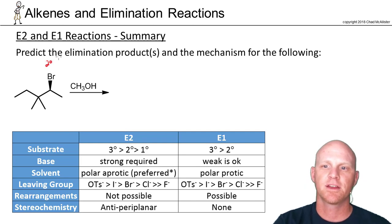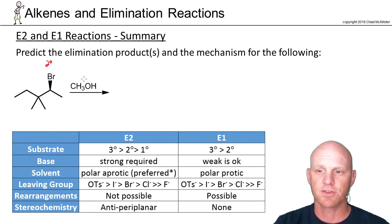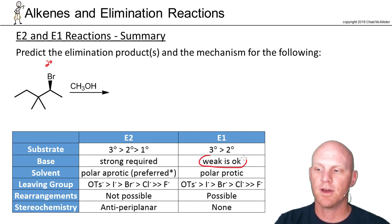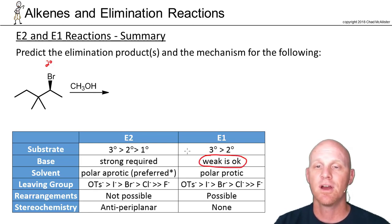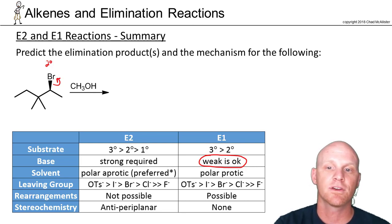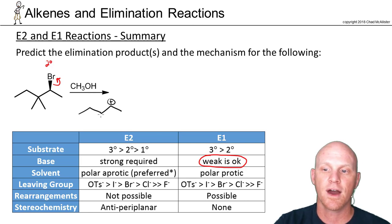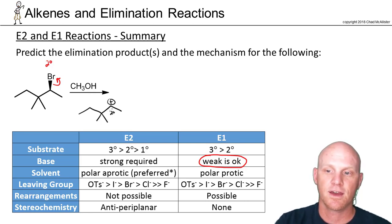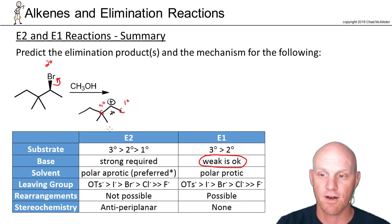Here we have a secondary halide — again, that doesn't tell us much. But the base is an alcohol, which is a weak base. That points us toward an E1 reaction. For E1, I highly recommend drawing the carbocation first to check for rearrangement. After bromine leaves, we get a secondary carbocation. Looking at its two adjacent carbons — one is primary, but the other is actually quaternary — so we definitely have a rearrangement.